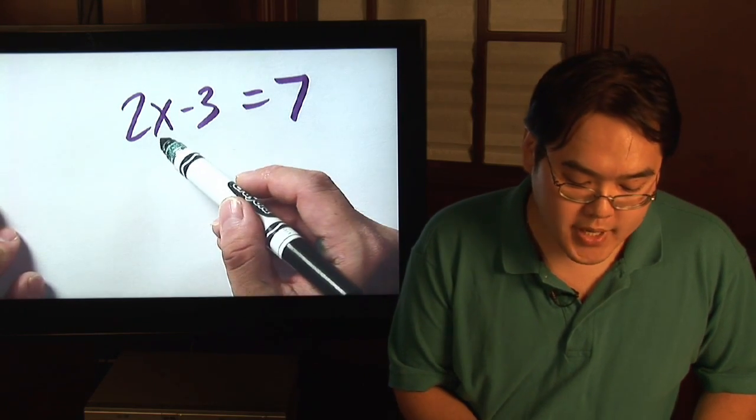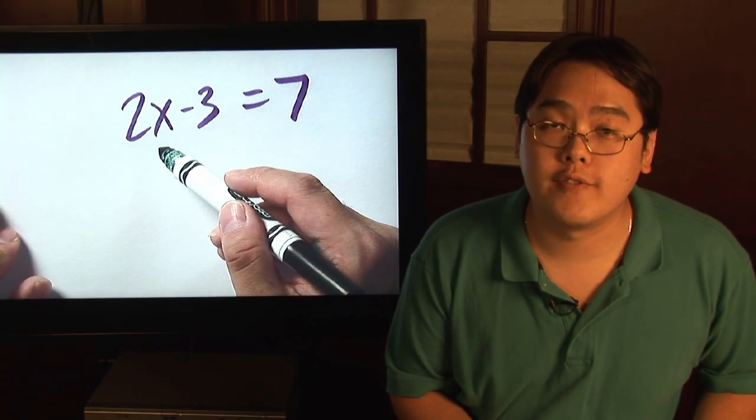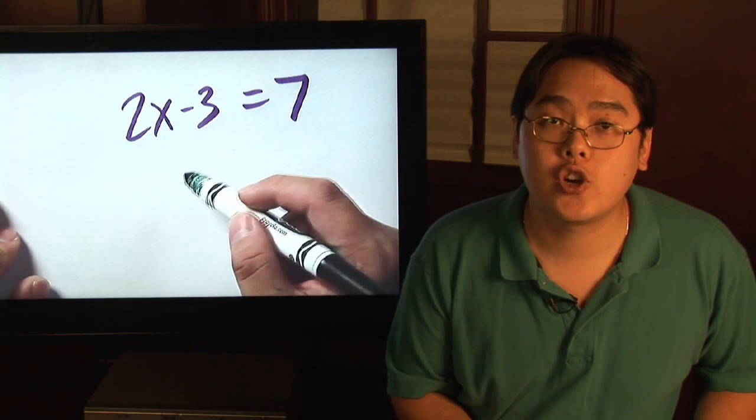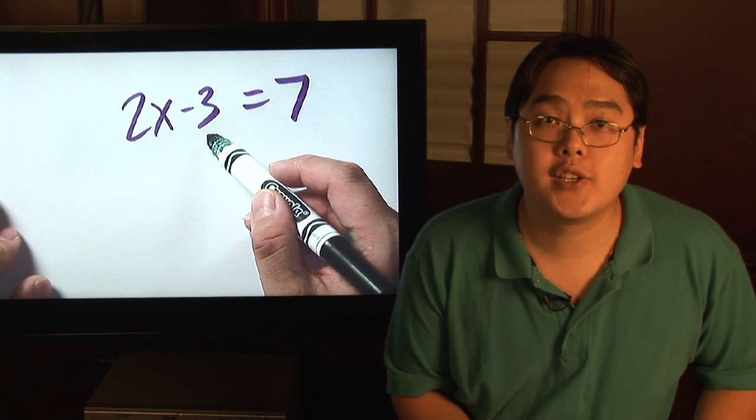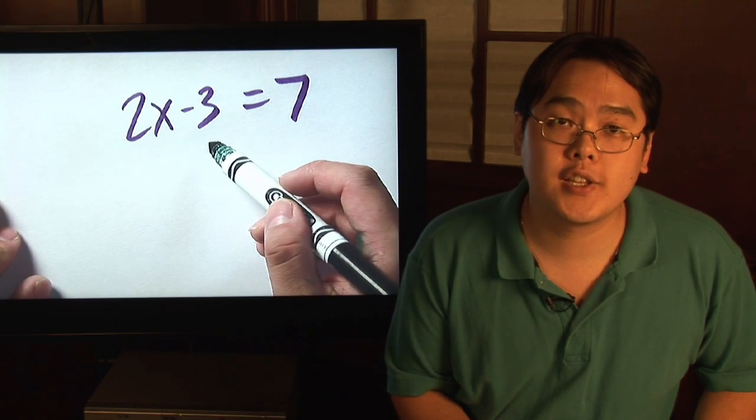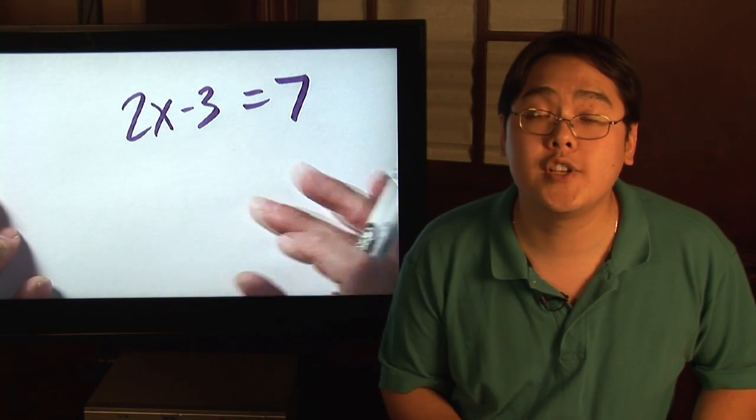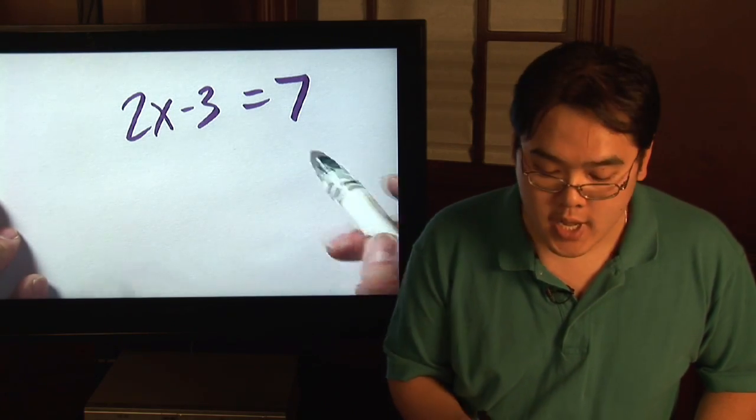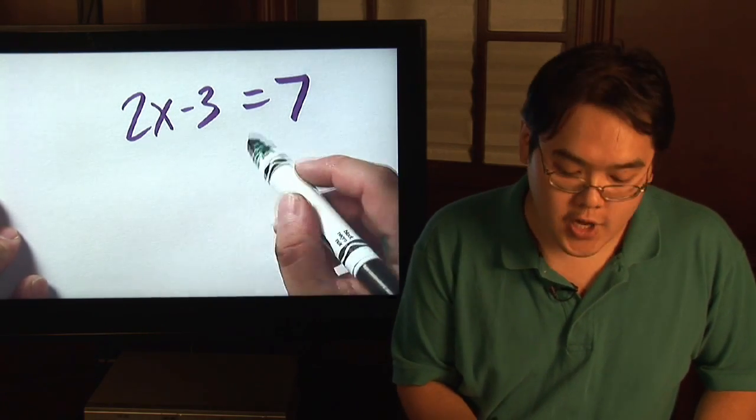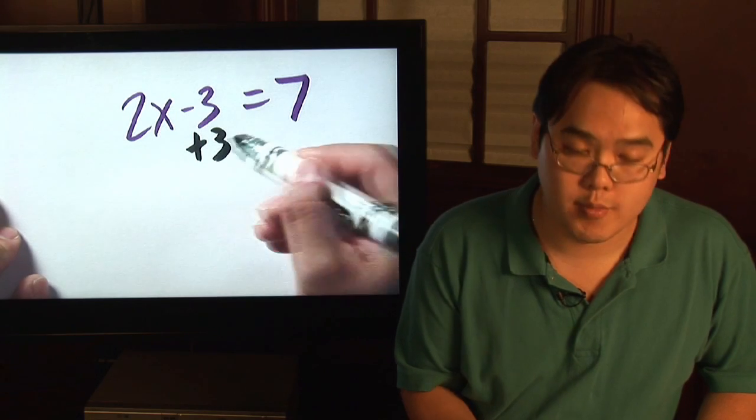So because x is the number that you're looking for, you want to get rid of any term that has nothing to do with x. Case in point, minus 3. The minus 3 has nothing to do with the 2x, so what you want to do is move it to the other side. So you always want to use the opposite operation, and because you're subtracting by 3, you want to add 3 to both sides.